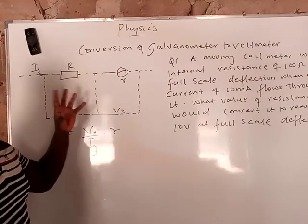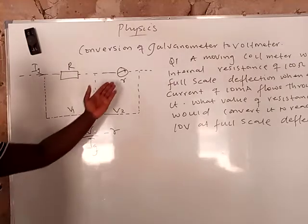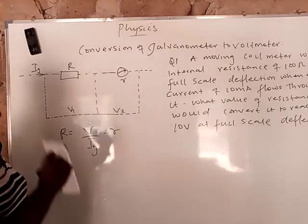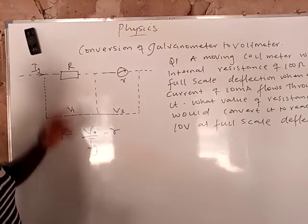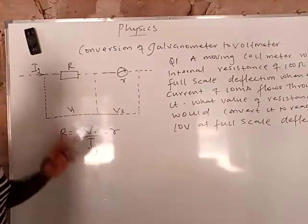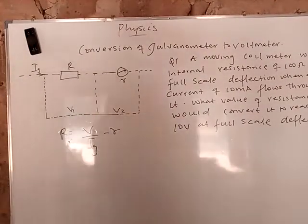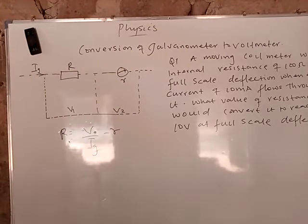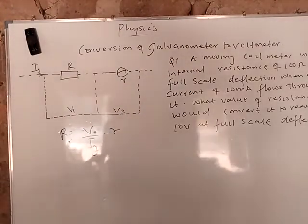A high resistance connected in series with a galvanometer. The name of the high resistance that is connected in series with the galvanometer is called the multiplier. Know it very well. This is a complete jump question. You need a resistance, and the name of the resistance is called a multiplier. Don't forget.